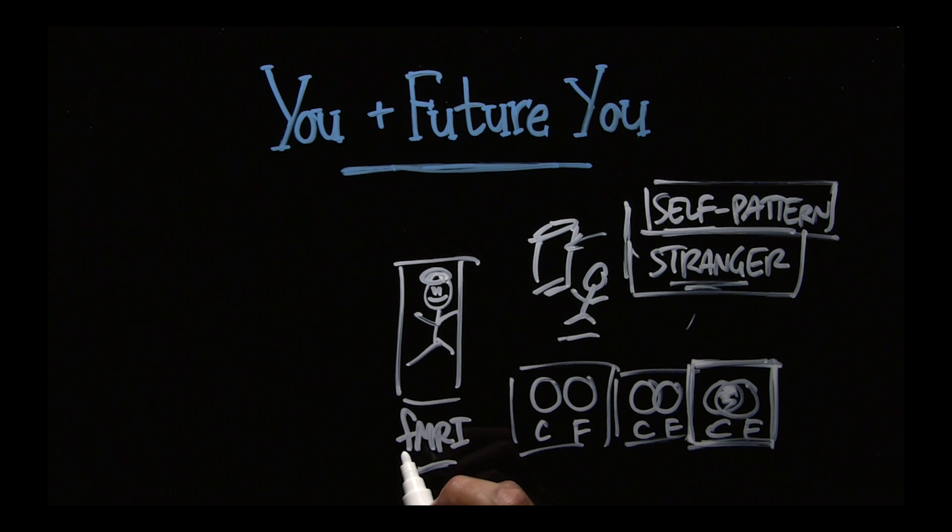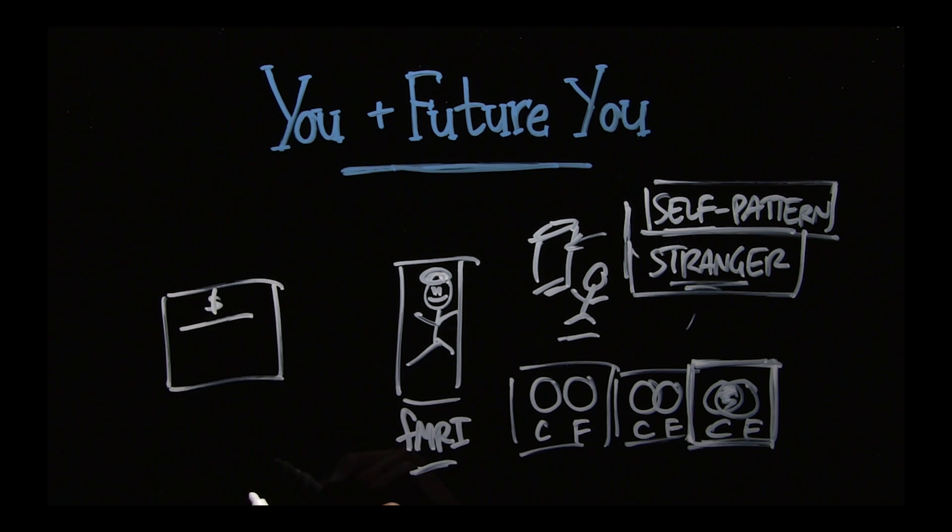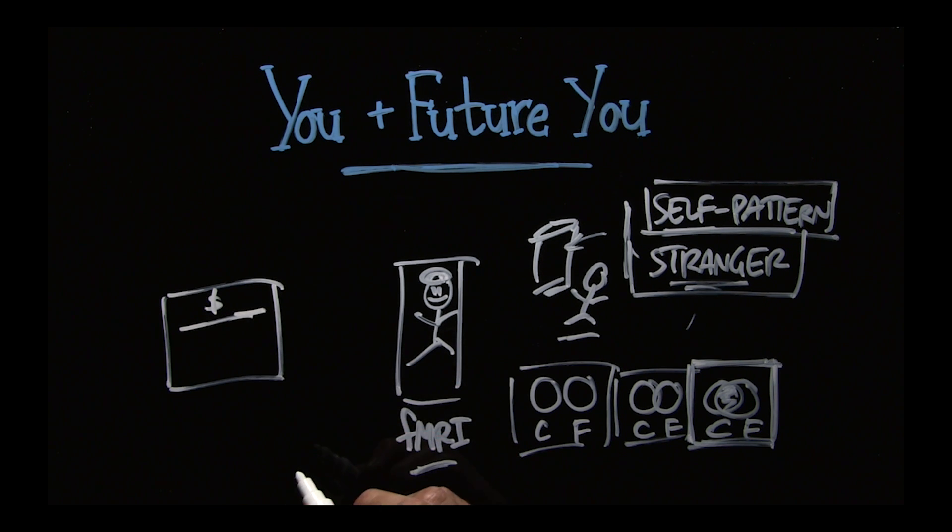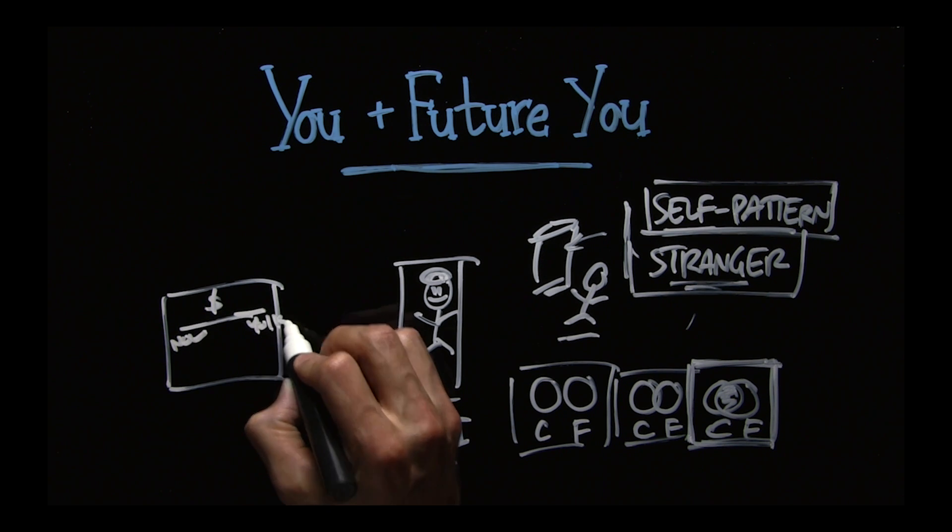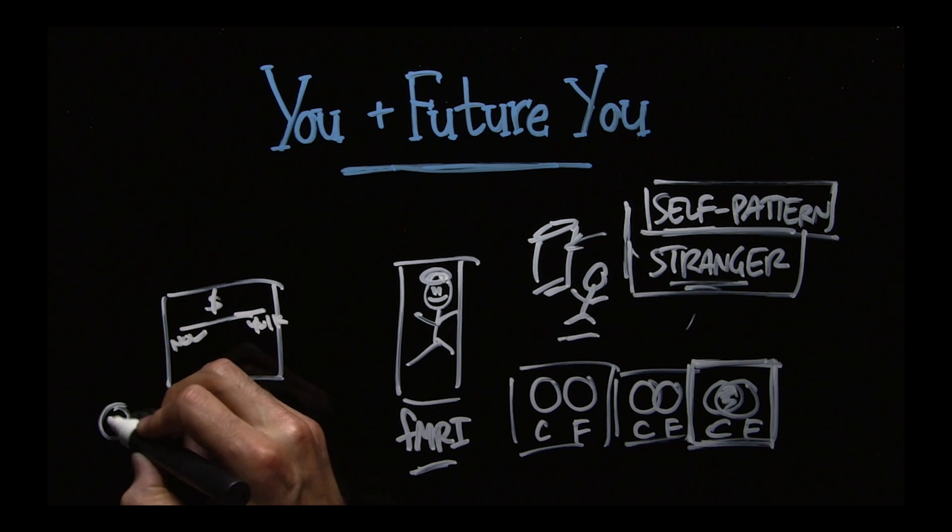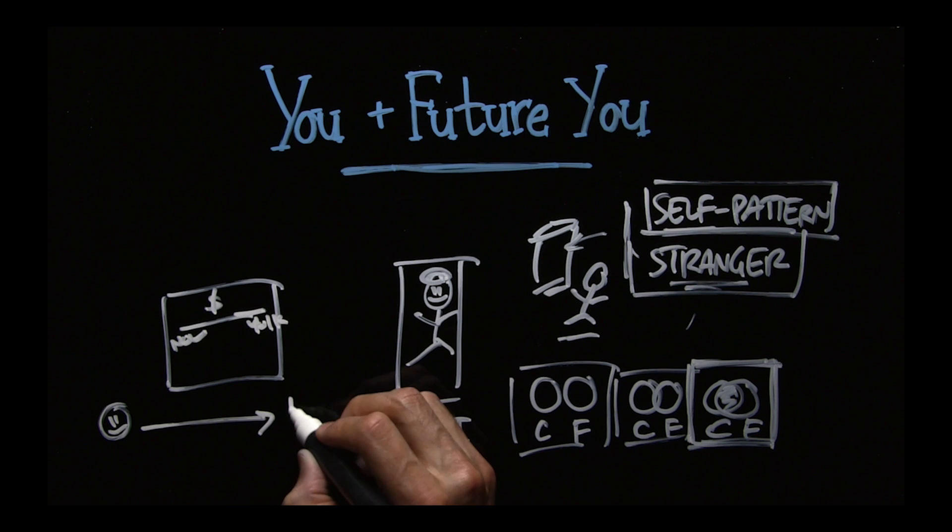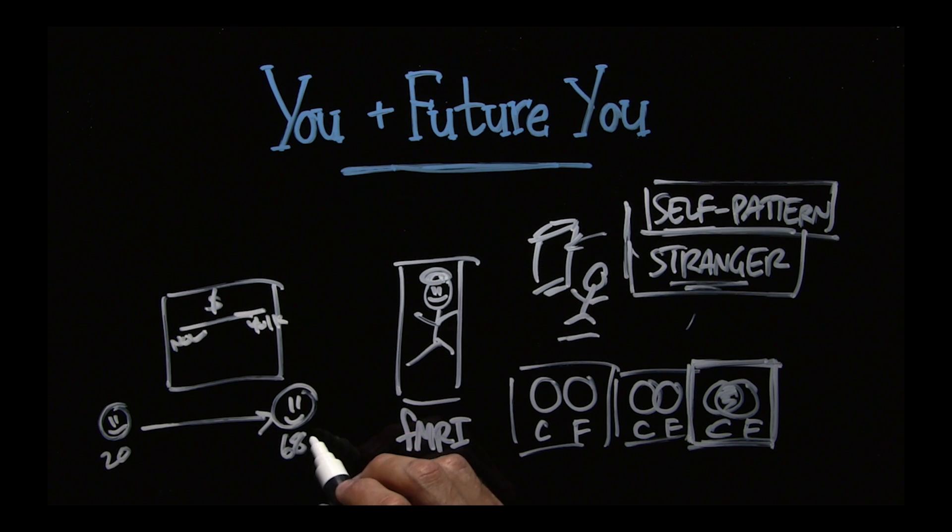They did research where they brought 20 year old kids into a lab and said, how much money do you think you should put into your 401k? And will you hypothetically put into your 401k? So they have now and they have retirement 401k. And they took a picture of these wonderful looking 20 year olds, and then they took this picture and made it look like a 68 year old version of them. They fast forward it, made it look like a 68 year old version of this person.